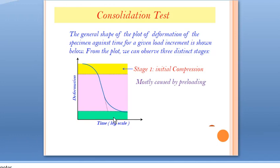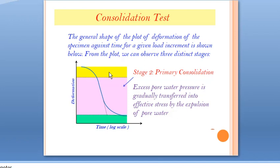The variation of deformation with time can be explained through three stages of consolidation. The general shape of the deformation-versus-time plot for a given load increment shows three distinct stages. Stage one is initial compression, caused by pre-loading — just after load application there is adjustment of soil particles and immediate settlement. Stage two is primary consolidation, where expulsion of pore water takes place over a very long time — potentially 10 years or 100 days.